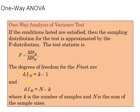We need to find it for the numerator and the denominator. In the numerator, this time it's k minus 1, where k is the number of samples, and in the denominator it's n minus k, where n is the sum of sample sizes.